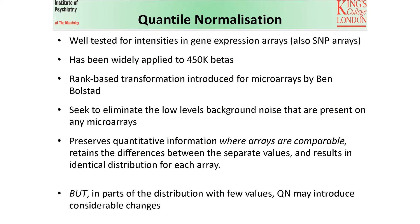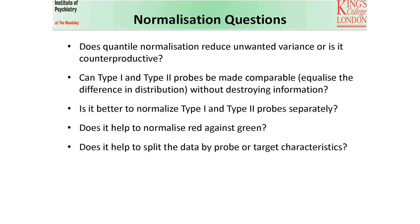Quantile normalisation preserves quantitative information when the arrays are comparable and retains differences between separate values, resulting in identical distribution for each array. However, in parts of the distribution with very few probes, quantile normalisation might introduce considerable changes. With this caveat, as well as the complex design of the 450K array, we ended up with quite a list of questions when we came to first analysing the data obtained from our experiments.